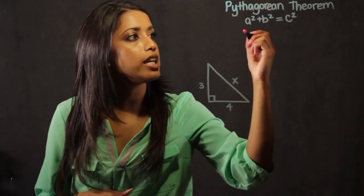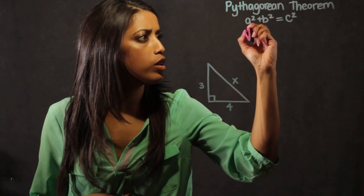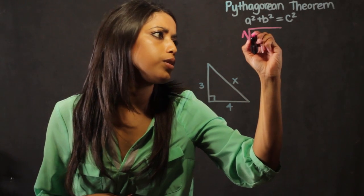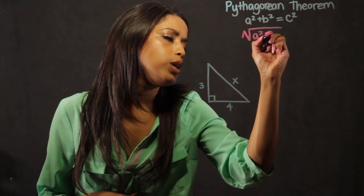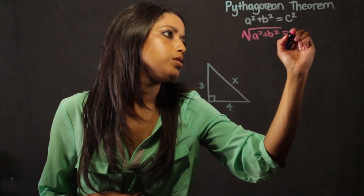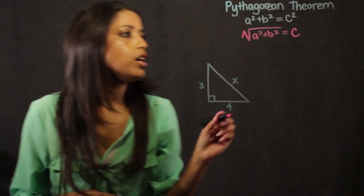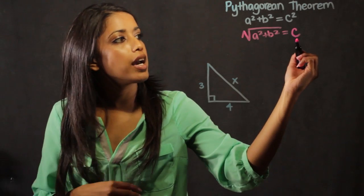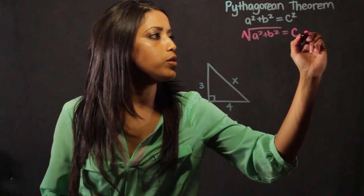So I take the square root of both sides of the Pythagorean theorem and it becomes the square root of a squared plus b squared equals c. So this becomes my distance formula that I'm going to be using.